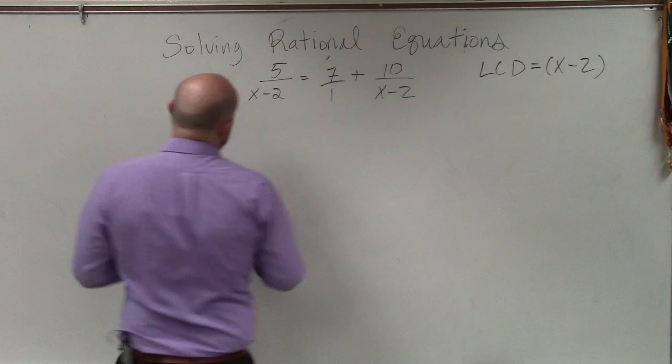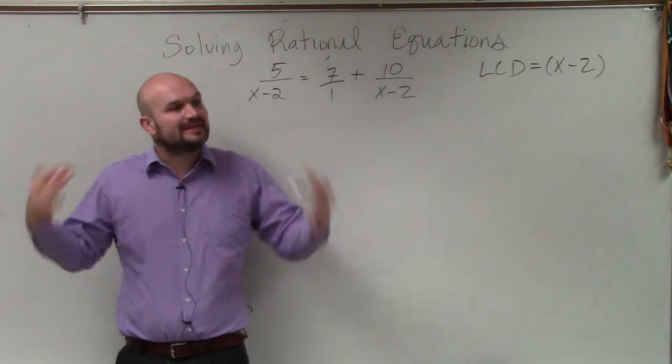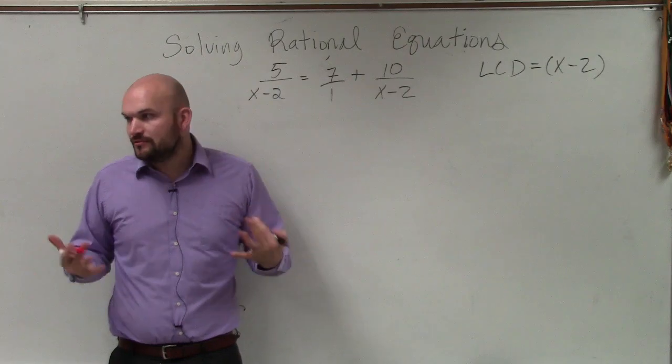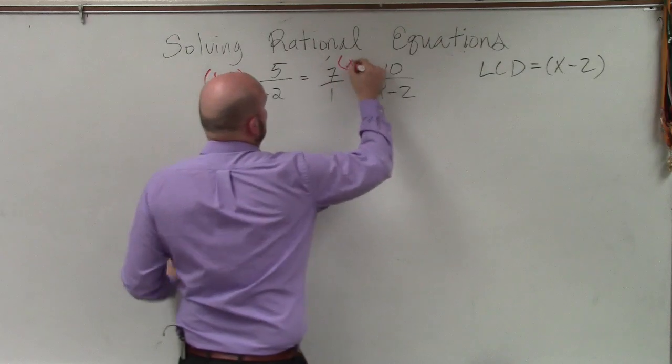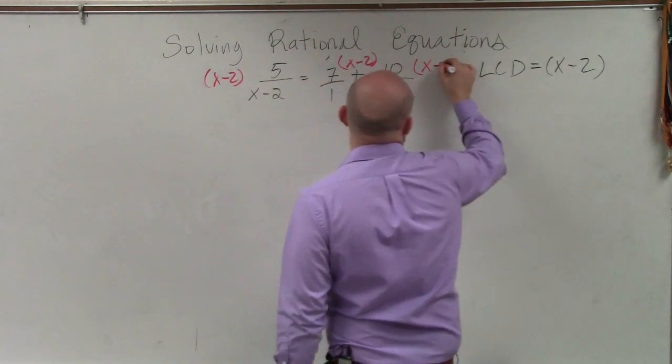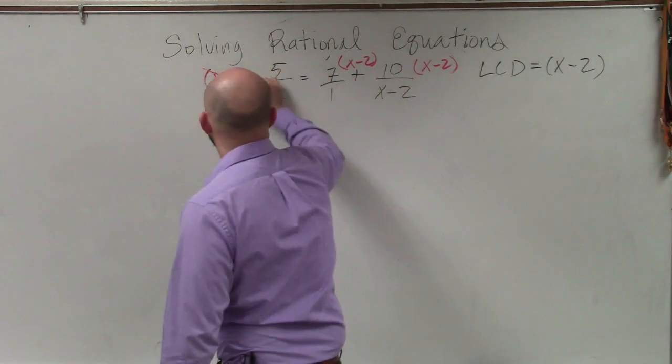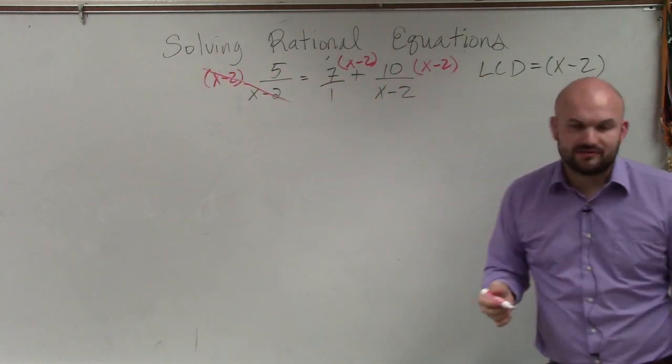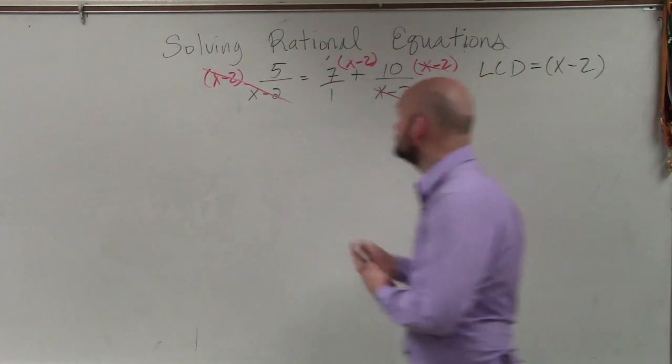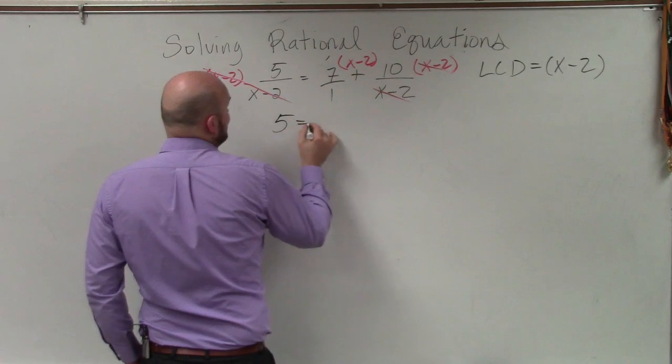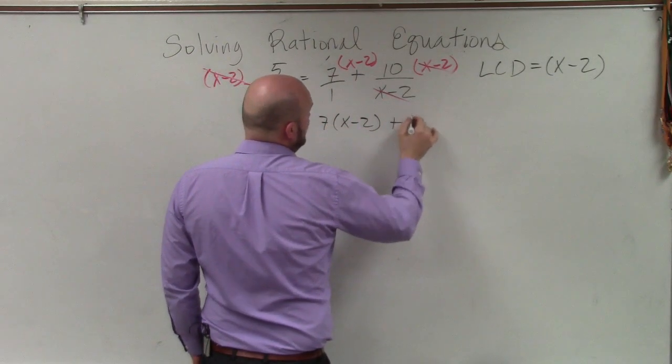So again, as I mentioned, basically what we want to do is we want to get rid of, when we're solving rational expressions, we want to eliminate our denominators. So I'm going to multiply everything by x minus 2. And what's nice about this is you guys can see that my x minus 2 in the numerator and denominator, those divide to 1. Over here, those divide to 1. So I'm left with an equation 5 is equal to 7 times x minus 2 plus 10.